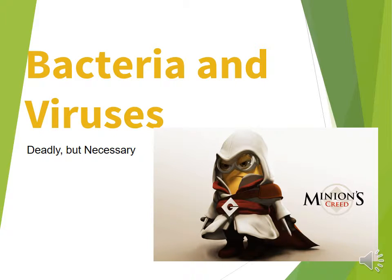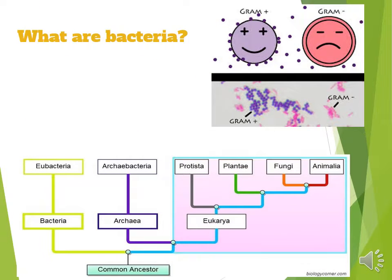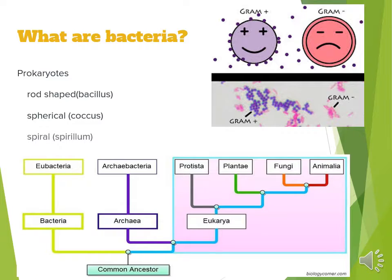They may be deadly but they are necessary, and they're not necessarily deadly anyway. Bacteria — you have a couple different kinds. You've got gram positive bacteria which accept the stain, and then gram negative bacteria which do not accept the stain. The ones that accept stain are purple; the ones that don't just show the pink, and that's how they can identify which type of bacteria it is. So we have bacteria prokaryotes — they are rod shaped, they can also be spherical or spiral. These are the names: Bacillus, Coccus, Spirillum.